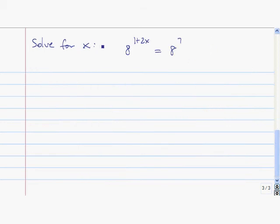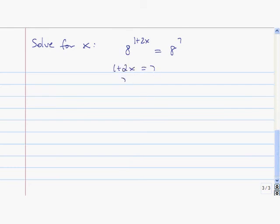Let's do this one together. We have 8 to the 1 plus 2x equals 8 to the 7th. I told you to take the log base 8 of both sides to get the exponent out. But when the bases are the same, the exponents have to be the same, so 1 plus 2x must be equal to 7. So 2x is 6, subtract 1 from both sides, and x is 3.